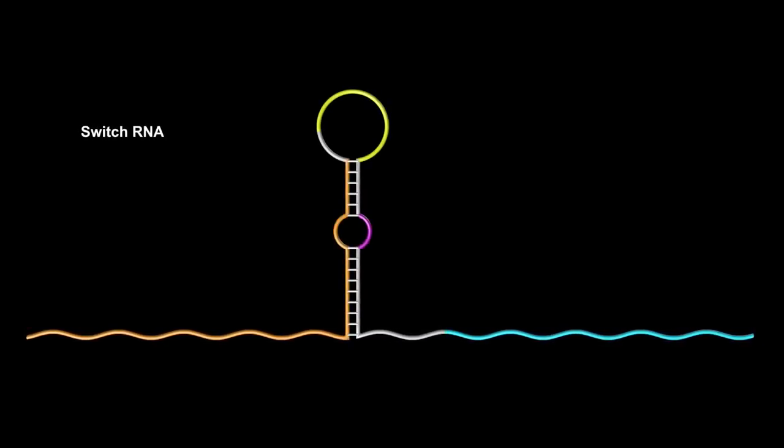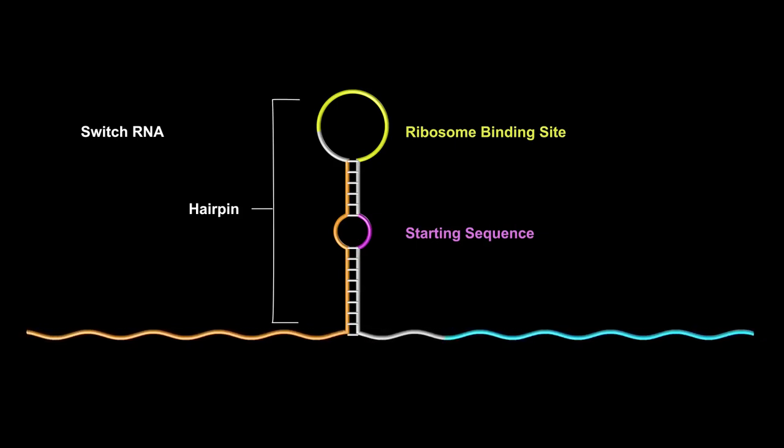The toehold switch is an RNA that encodes the gene for a protein of interest. However, translation of the gene is initially turned off. A hairpin structure in the toehold switch hides the ribosome binding site and the starting sequence for the gene and thus represses production of the protein.